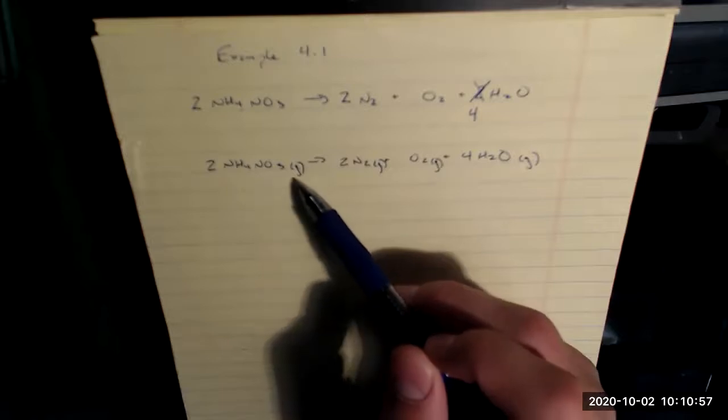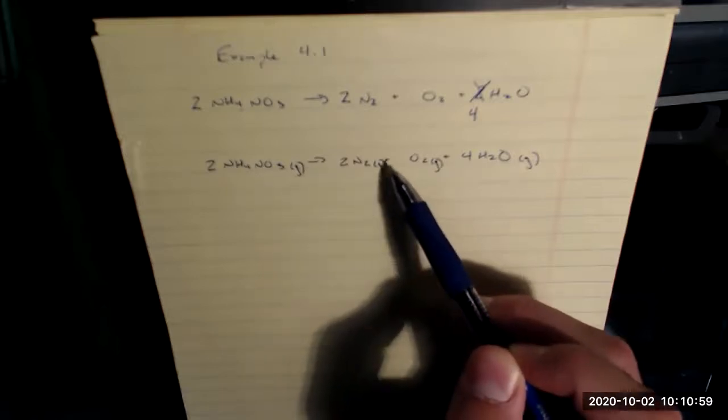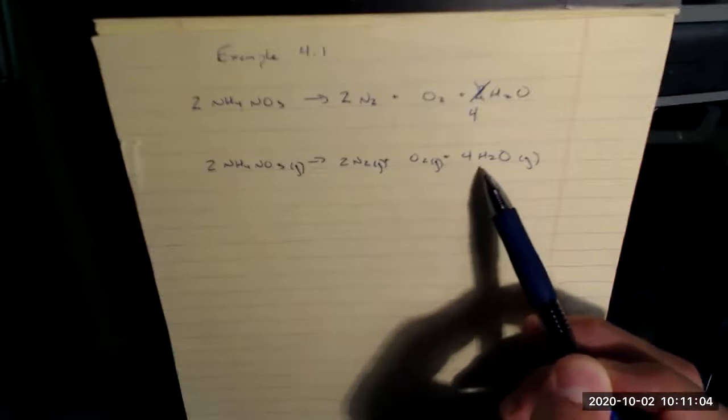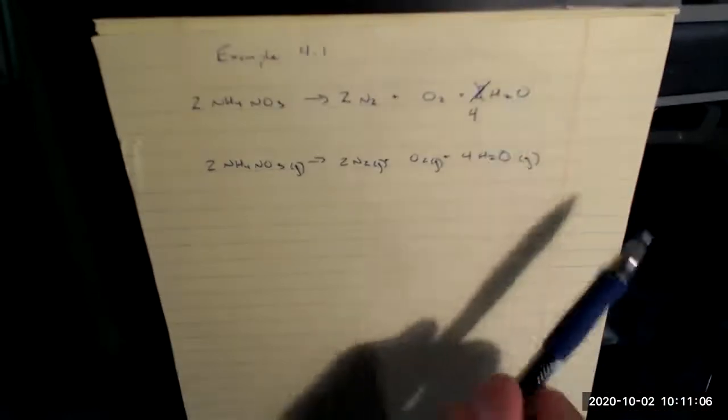Two NH4 NO3 gas, goes to two N2 gas, plus O2 gas, right? Coefficient one is not shown, plus four H2O gas, and this problem is solved.